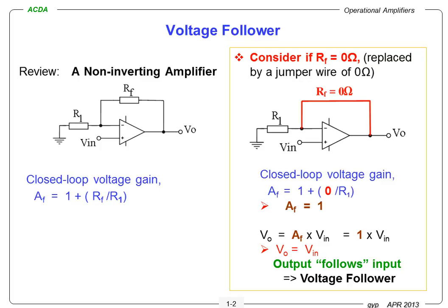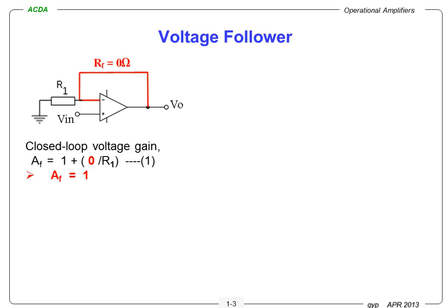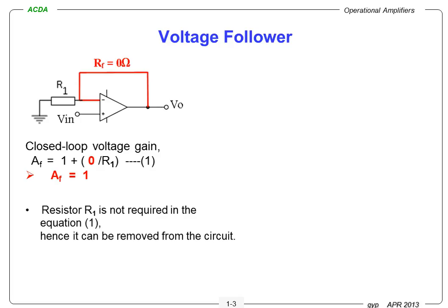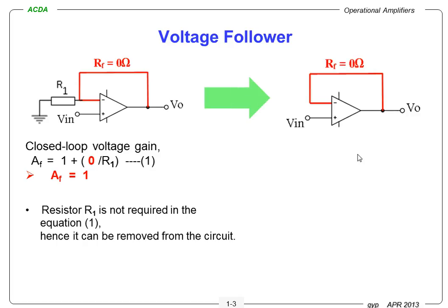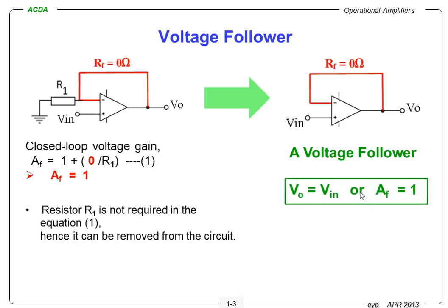Can we simplify it further? Looking at the circuit again, Equation 1 shows that R1 is not required to get AF equals 1. So now we have this simplified circuit, which is the voltage follower. Output equals input voltage, or closed loop voltage gain AF equals 1 — a voltage follower.